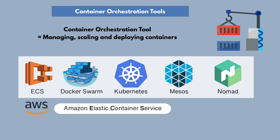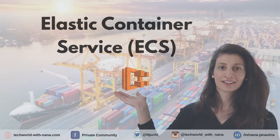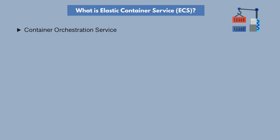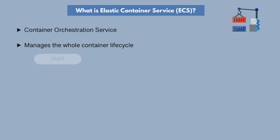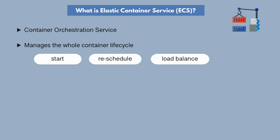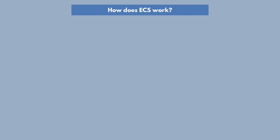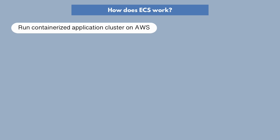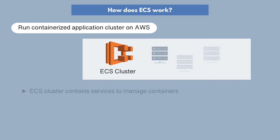ECS is essentially a container orchestration service. ECS, being an orchestrator for containers, will manage the whole lifecycle of a container — when you start the container, if it needs to get rescheduled somewhere, if it needs to get restarted, load balanced, etc. So how does this service actually work on AWS? If you wanted to create a container cluster managed by AWS ECS service, you would create an ECS cluster.